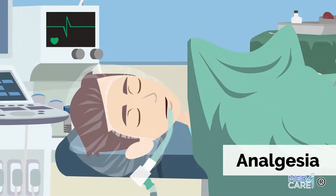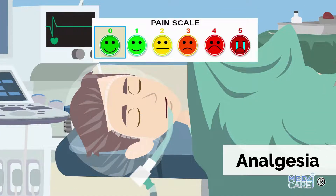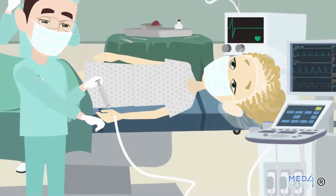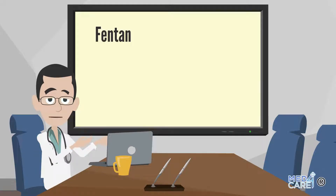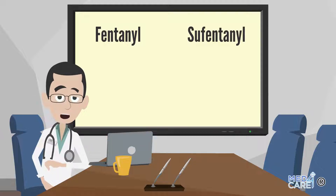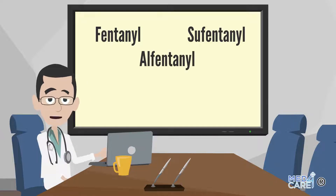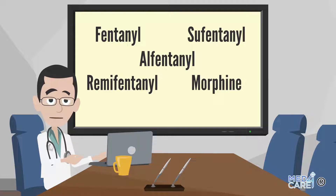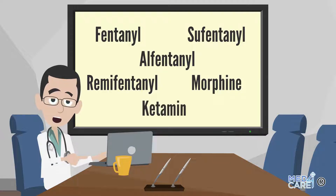During general anesthesia, no pain should occur. Opiates are among the most powerful analgesic drugs used for this purpose, administered intravenously. Among the most used are: Fentanyl for repeated intravenous administration; Sufentanil in continuous infusion or repeated intravenous administration; Alfentanil in continuous infusion or repeated intravenous administration; Remifentanil in continuous infusion; Morphine by repeated intravenous administration; and Ketamine by repeated intravenous or continuous infusion.